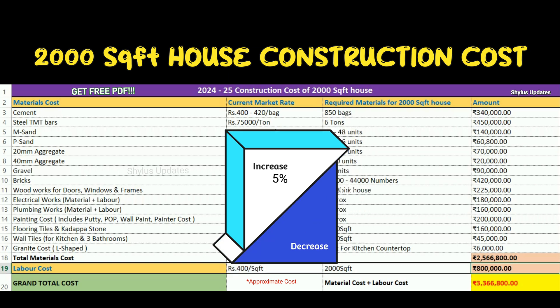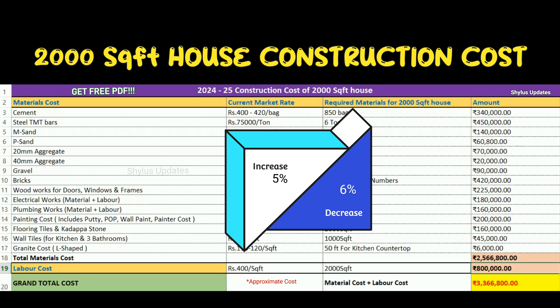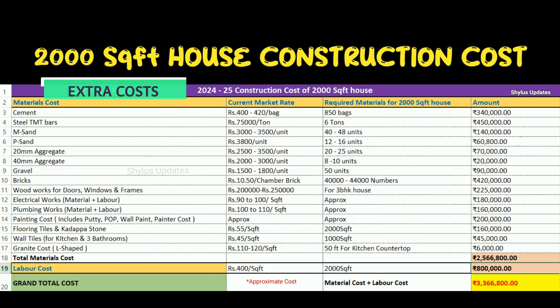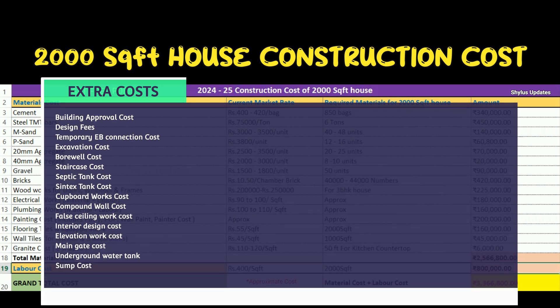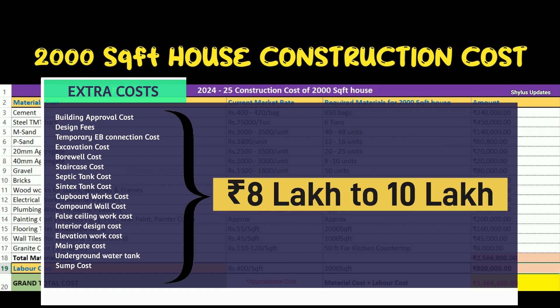Apart from this cost, extra mandatory work costs must also be included: building approval cost, design fees, temporary EB connection cost, excavation cost, borewell cost, staircase cost, septic tank cost, sump tank cost, cupboard work cost, compound wall cost, false ceiling work cost, interior design cost, elevation work cost, main gate cost, and underground water tank. For all these works, the cost should be around ₹8,00,000 to ₹10,00,000.